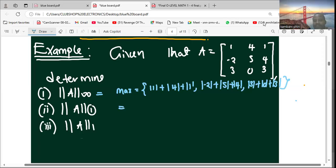This gives us the maximum of: 1 plus 4 is 5, 5 plus 1 gives 6, comma, 2 plus 5 is 7, then 7 plus 4 gives 11, and 3 plus 0 is 3, plus 3 is 6. So what is the maximum here? The maximum is 11. So the infinity norm of A is 11.